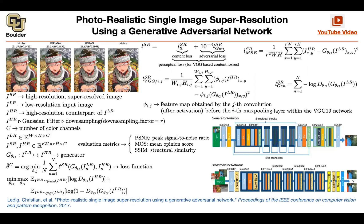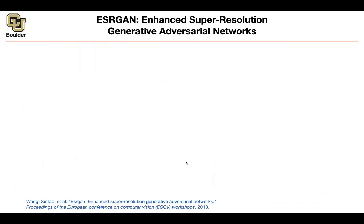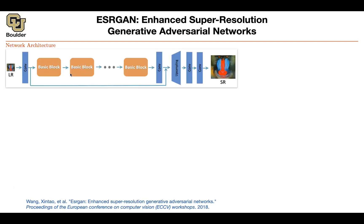We are going to improve upon the generator architecture and the discriminator architecture in the next paper, which is ESRGAN — Enhanced Super Resolution Generative Adversarial Networks.